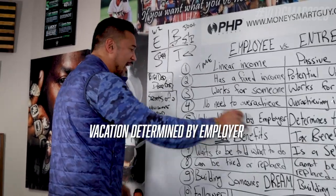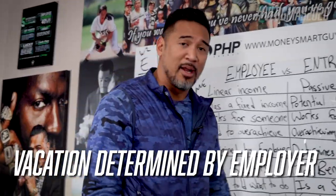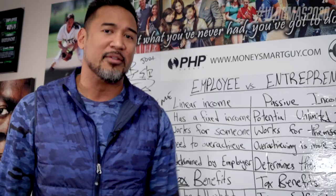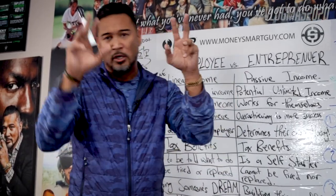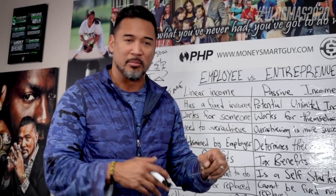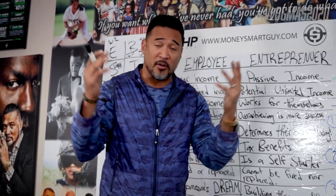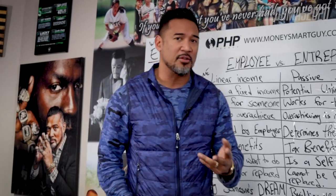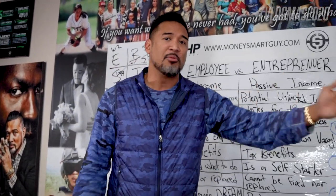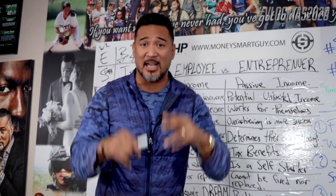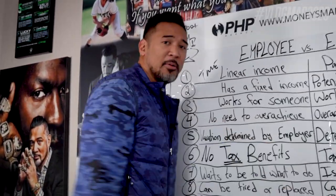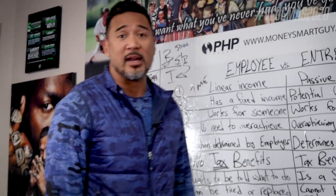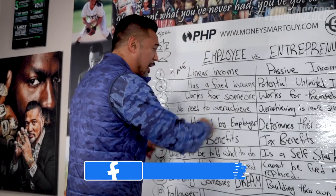Number five: vacation determined by the employer. In the military, we got 30 days paid leave — they didn't even call it vacation. If you work for a boss, it's one, two, or three weeks vacation based on your tenure. Either way, guess who's not in control of your vacation? You. It's determined by the employer. They might tell you to work on a holiday or a Saturday.